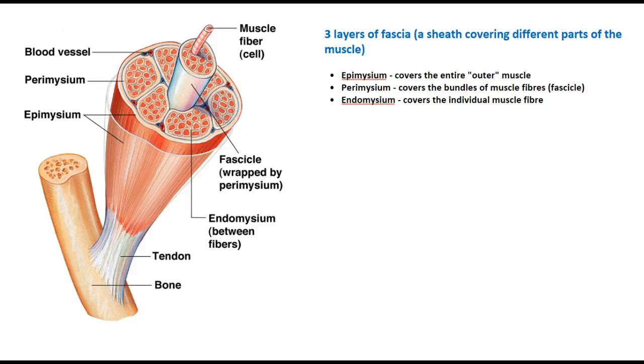So if we start here we'll look at the three sheaths that cover different components of the muscle. The first one is the epimysium. Now the epimysium surrounds the entire muscle.